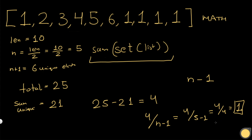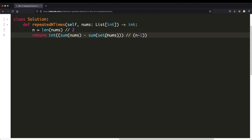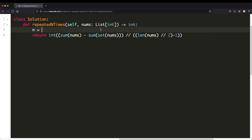The time complexity of this solution is O(N) — finding the sum of the entire array is O(N) and finding the sum of the set is also O(N), giving O(2N) or just O(N). The space complexity is also O(N) since we use a set. In code, we return (sum(nums) - sum(set(nums))) divided by (len(nums) // 2 - 1).